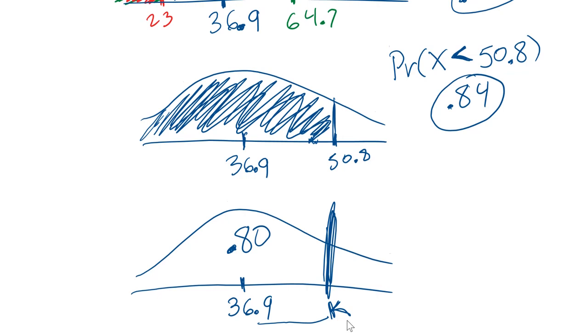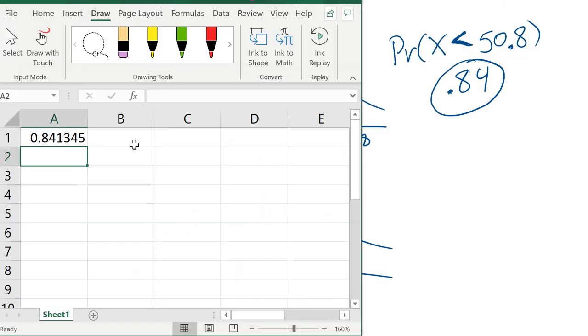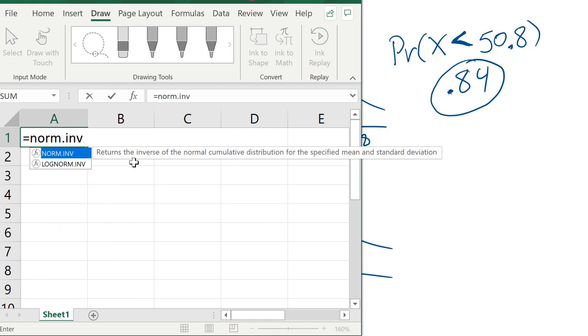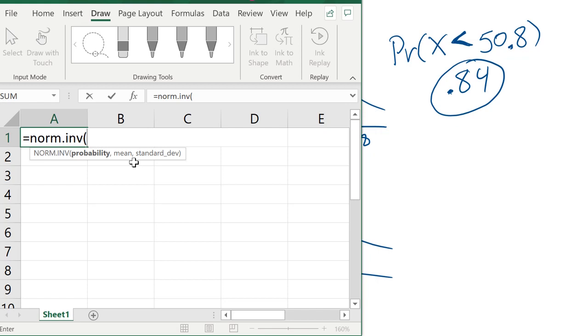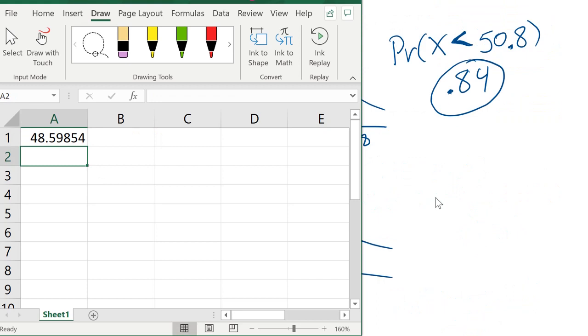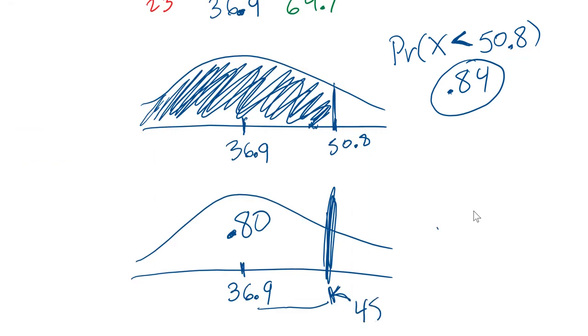To figure out what is K, I can use Excel. So, let me go here, delete this. I'm going to type norm dot, instead of dist, it's going to be inv, inverse. Open parentheses. The probability to the left is 0.80. The mean is still 36.9. The standard deviation is 13.9. Close parentheses. Press enter. And voila, they give you the answer. 48.598. So, I can round that to 48.6.